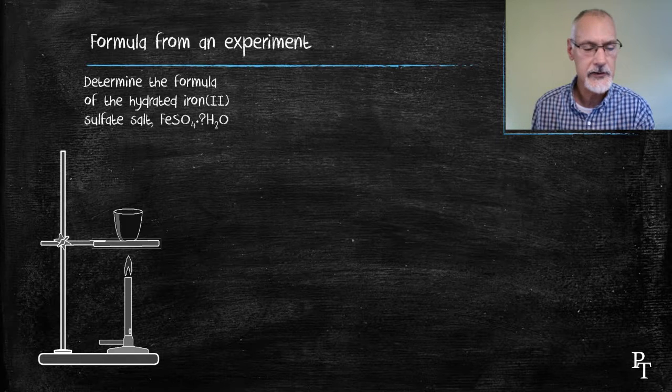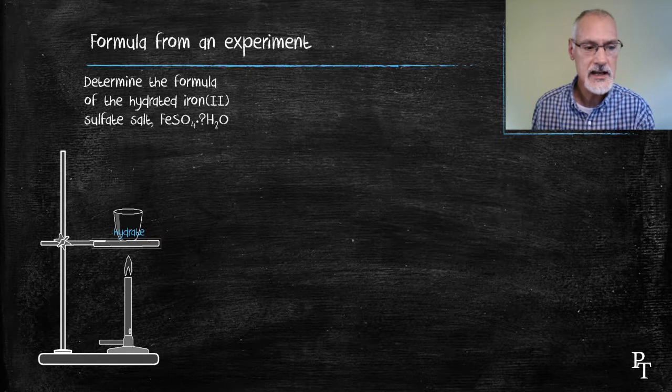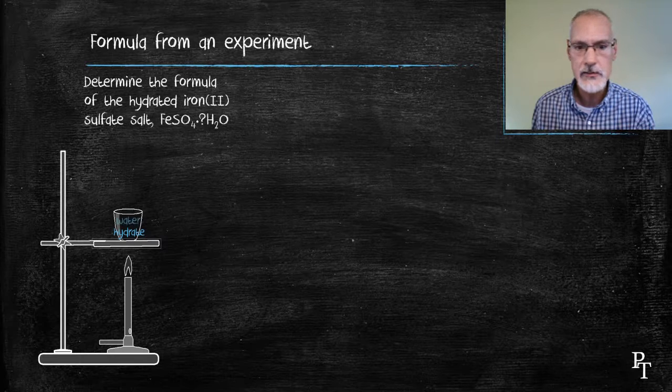I begin with a similar apparatus, and into that crucible I place what's called the hydrate, the chemical with the water attached to it. Upon heating, I can drive the water out of that substance, leaving behind the dry or the anhydrous form, meaning without water.